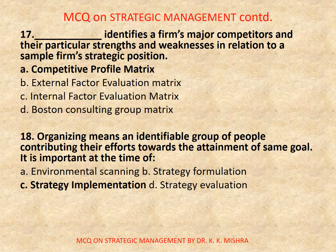Question 17: Identify a firm's major competitors and their particular strengths and weaknesses in relation to a sample firm's strategic position — A, competitive profile matrix; B, external factor evaluation matrix; C, internal factor evaluation matrix; D, Boston Consulting Group matrix. Correct option is A: competitive profile matrix.